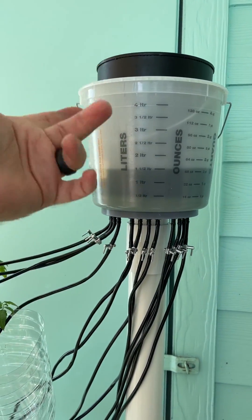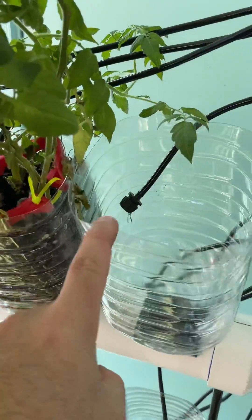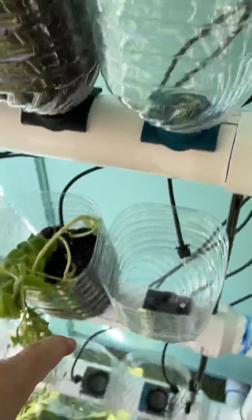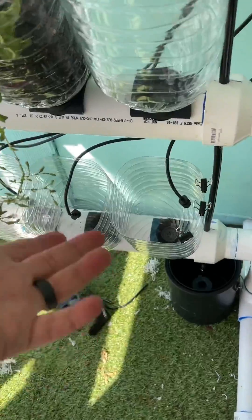And it starts cycling through and we see it dripping out right there. The whole system, obviously we don't have all the plants in here yet.